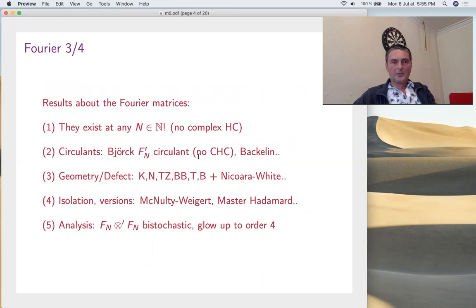What's known about the Fourier matrix, most of the efforts are focused so far on Fourier and its deformations. As a first remark, Fourier exists at any N, so no complex Hadamard conjecture of course. There is also no circulant Hadamard conjecture because these cyclic roots of Björck allow us to put a friend in circulant form.